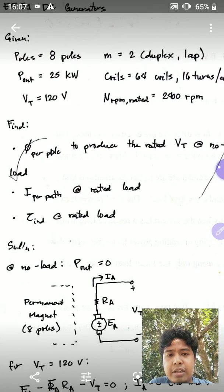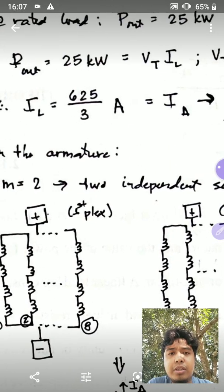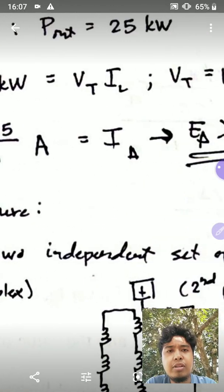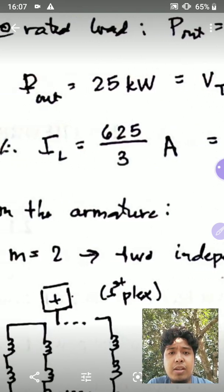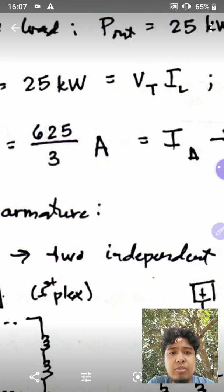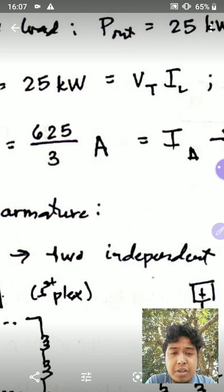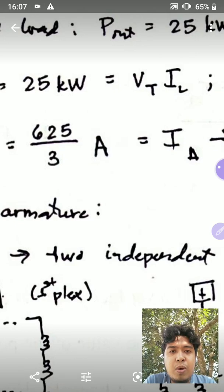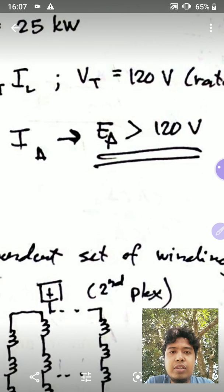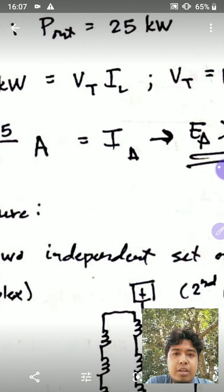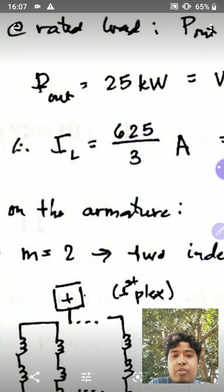Now we get the current at the rated load. The rated load is 25 kilowatts, and that 25 kilowatts is equal to the terminal voltage times the load current. So if we want a terminal voltage of 120 volts, we can easily get the load current as 625 over 3 amperes.